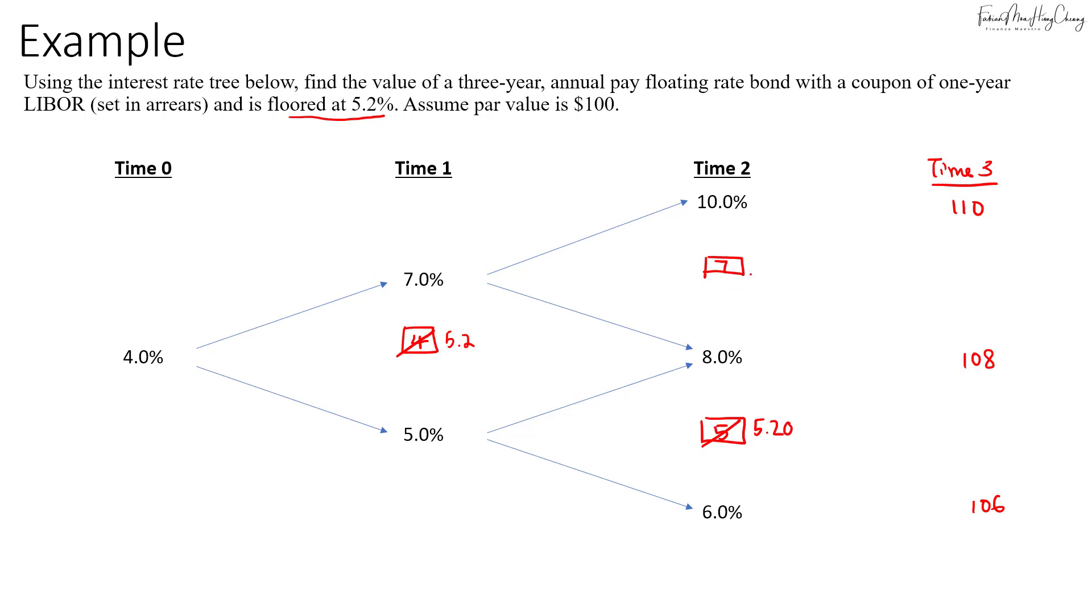Now we'll discount the cash flows back to time 2. I'll take $110 divided by 1.10, so that gives us a value of $100. And then for $108 we discount it back at 8%, so that also gives us $100 par. And then for $106 we discount it back at 6%, so that gives us $100.